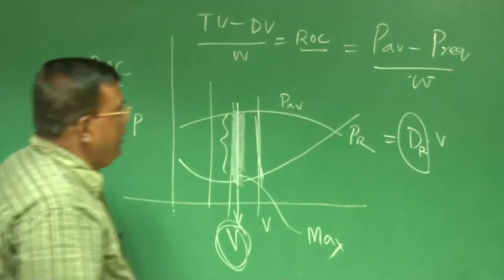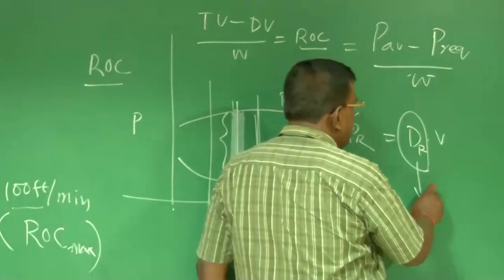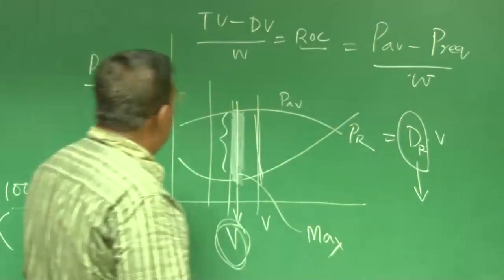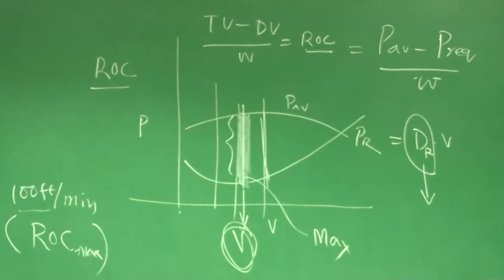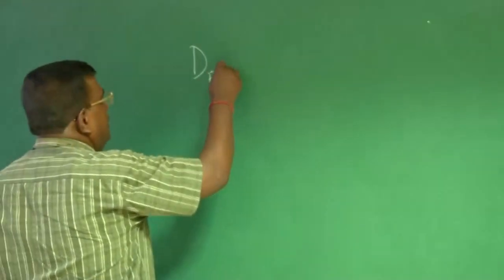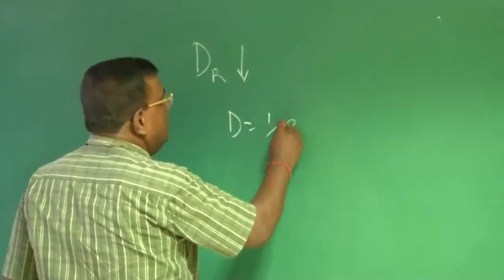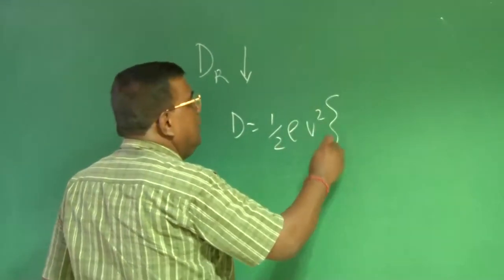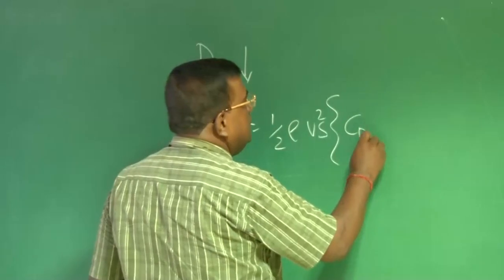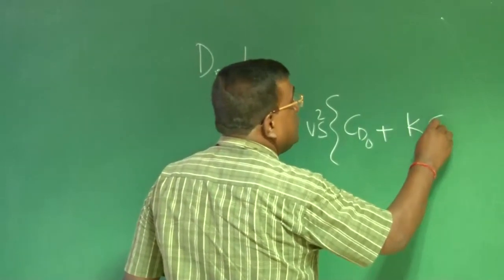And what is the meaning of drag required being less? If I see drag required, if I want to be low, then drag is nothing but half rho V square S CD0 plus K CL square.